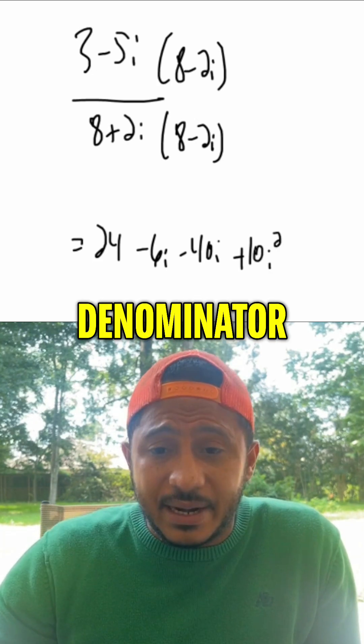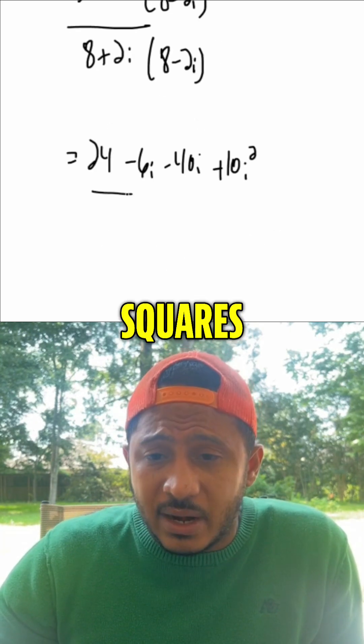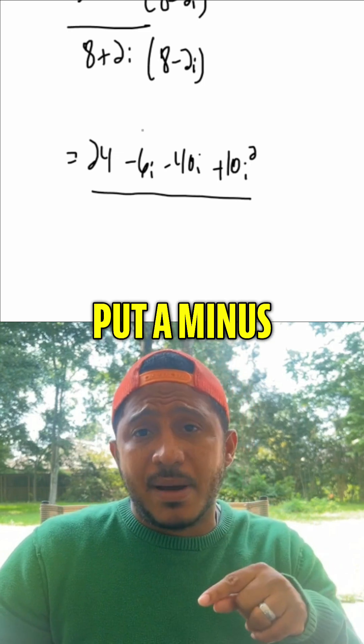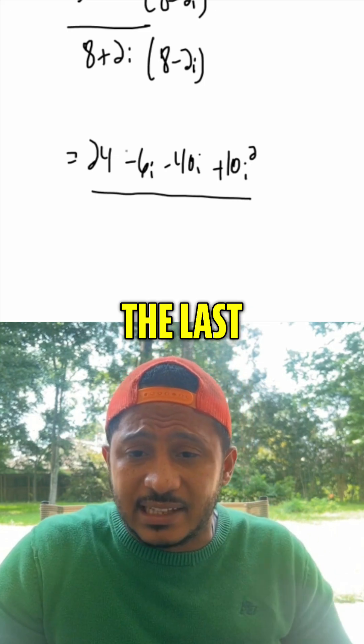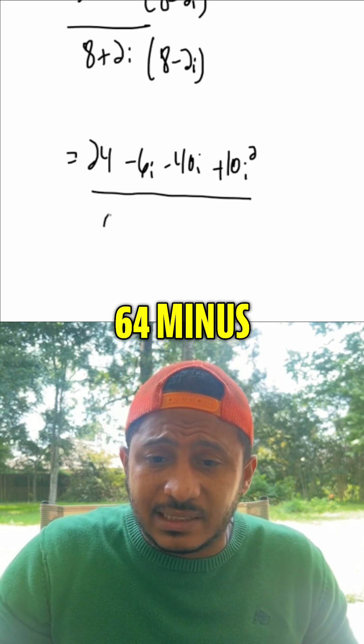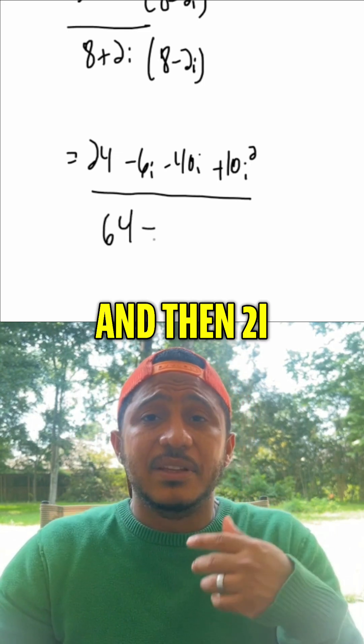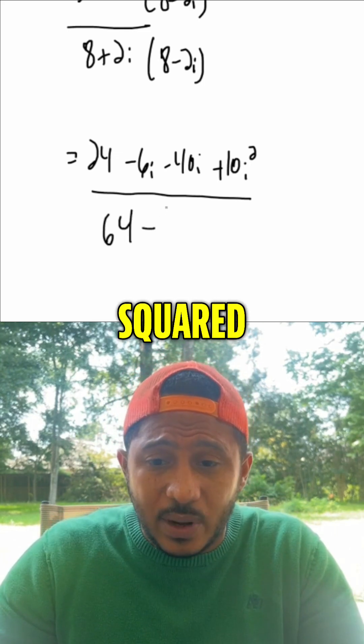Then the denominator — well, this is the difference of squares. Multiplying those, we just get the square of the first, put a minus, and then the square of the last. So that would be 64 minus 2i squared.